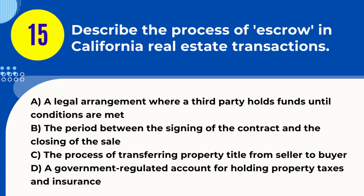Question 15. Describe the process of escrow in California real estate transactions. A. A legal arrangement where a third party holds funds until conditions are met. B. The period between the signing of the contract and the closing of the sale. C. The process of transferring property title from seller to buyer. D. A government-regulated account for holding property taxes and insurance. Answer: A. A legal arrangement where a third party holds funds until conditions are met.